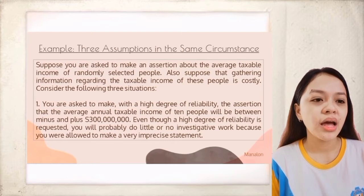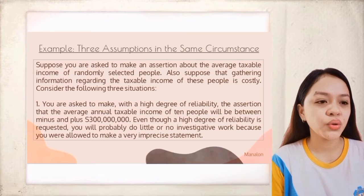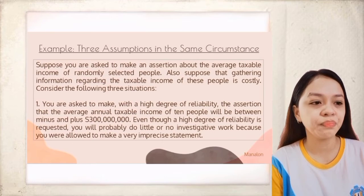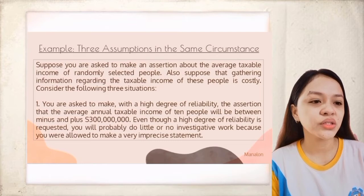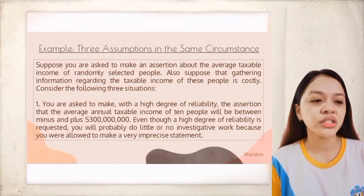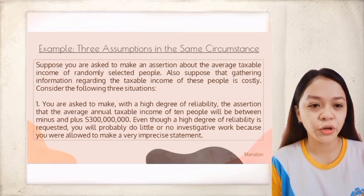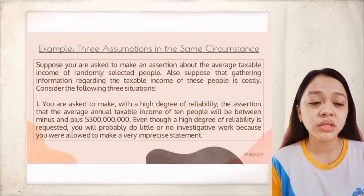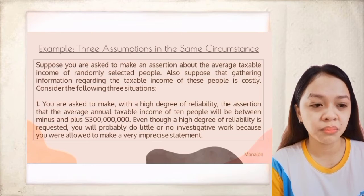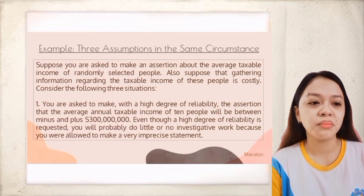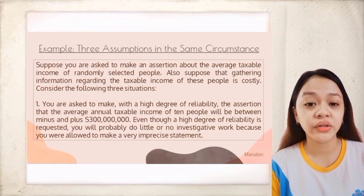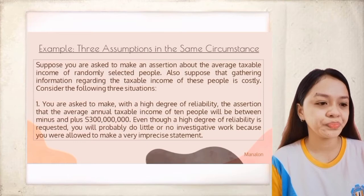To illustrate, suppose you are asked to make an assertion about the average taxable income of randomly selected people, and gathering this information is costly. In the first situation, you are asked to make, with a high degree of reliability, the assertion that the average annual taxable income of 10 people will be between minus and plus 300 million. Even though high reliability is requested, you will probably do little or no investigative work because you are allowed to make a very imprecise statement — meaning a high tolerance for materiality means the procedures are not burdensome.